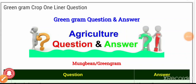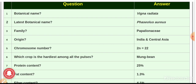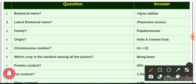Hello friends, welcome back to Agri Exam. In this video we will discuss the important questions on green gram. Question number 1: the botanical name of green gram — the answer is Vigna radiata. That is the botanical name of green gram.